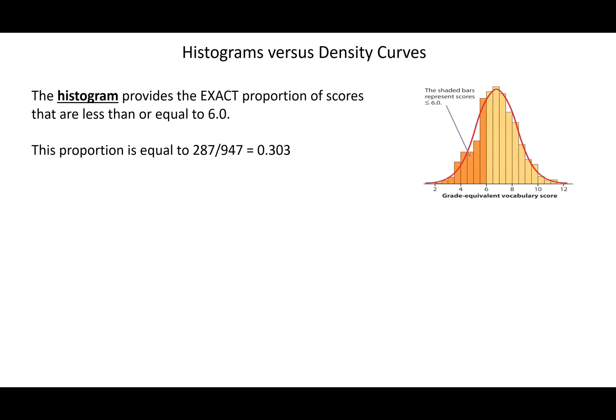So talking histograms versus density curves. The histogram is going to provide an exact proportion. So for example, we have these vocabulary scores, and you might want to see what proportion of the vocabulary scores were at or less than 6.